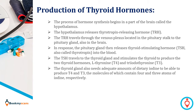In response, the pituitary gland releases thyroid stimulating hormone (TSH), also called thyrotropin, into the blood. The TSH travels to the thyroid gland and stimulates the thyroid to produce the two thyroid hormones: L-thyroxine (T4) and triiodothyronine (T3). The thyroid gland also needs adequate amounts of dietary iodine to produce T3 and T4, the molecules of which contain 4 and 3 atoms of iodine respectively.